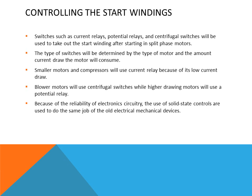Switches controlling the start windings — such as current relays, potential relays, and centrifugal switches — are used to remove the start windings after starting a split phase motor. The type of switch is determined by the motor and the current it draws. The start windings cannot stay in the circuit — if they did, it would damage the motor. Another type is the solid state switch or relay, which performs the same function as electromechanical devices but is more reliable since it has no moving parts and less to wear out.